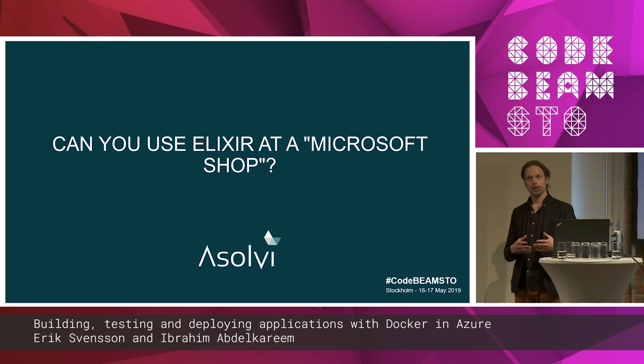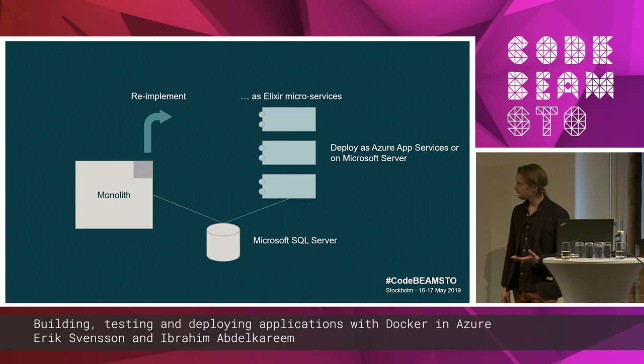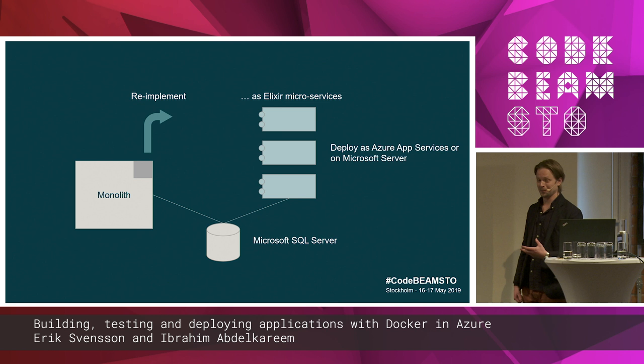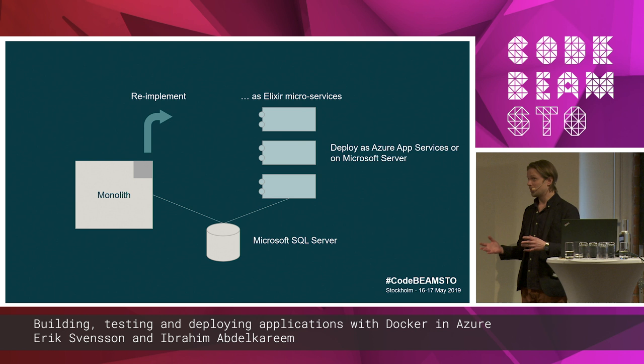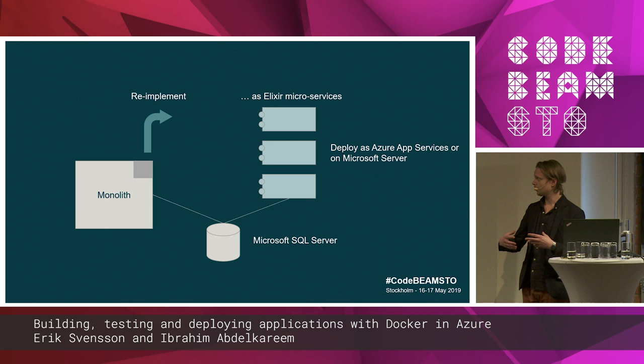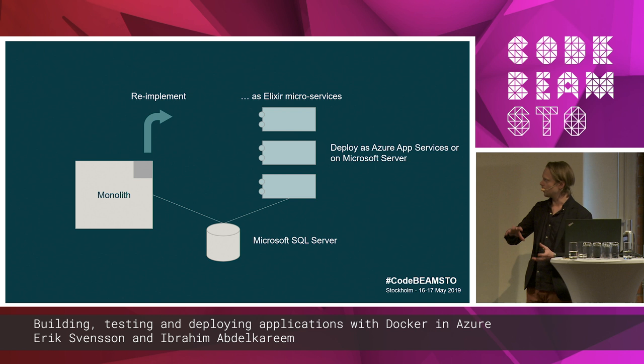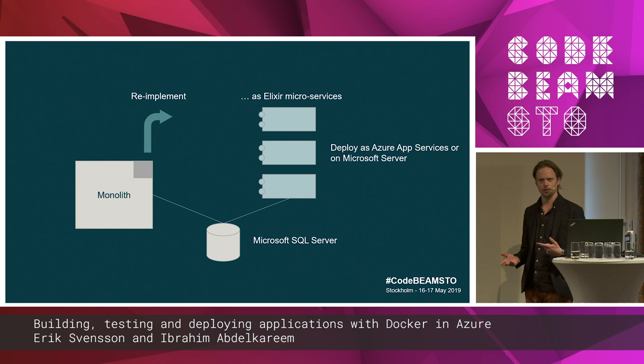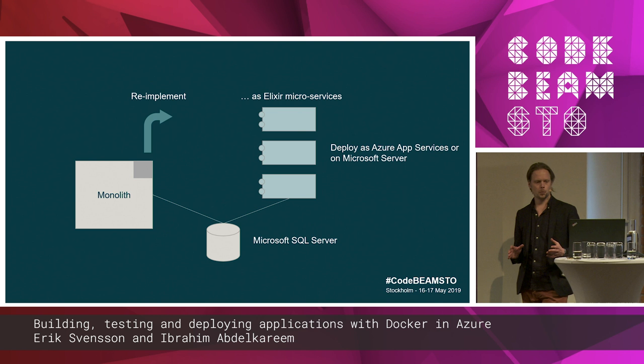That's the backstory on how we got to do an experiment. We have these monoliths delivered to customers, some built on VB6 and other legacy languages. We got the opportunity to take one core feature and try to reimplement it as Elixir microservices. We did this as an experiment with the help of Erlang Solutions, as we're fairly new to this, and the goal is that it should be deployable on Windows Server or in Azure as app services.